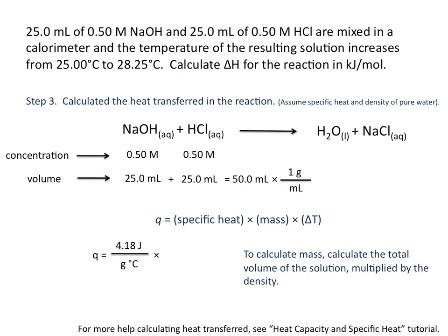And in order to calculate the mass, we calculate the total volume of the solution first, 50 milliliters, and multiply that by the density of the solution. And because we're assuming the density of water, our volume in milliliters will be the same numerical value in grams. And so the mass is equal to 50 grams.